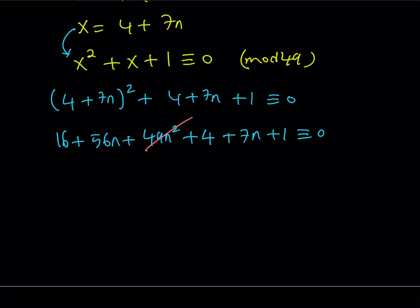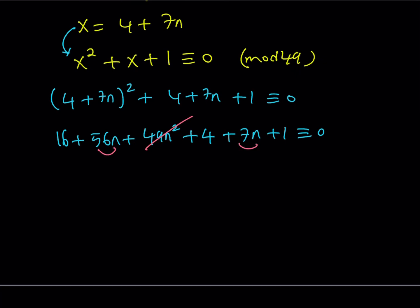And then let's put everything else together. 56n plus 7n. That's going to make 63n. And 16 plus 4 plus 1 is going to make 21. And this is congruent to 0 mod 49. Now, 63 is greater than 49. So I can reduce it. If you subtract 49 from it, you're going to get 14n plus 21 is congruent to 0 mod 49 again.